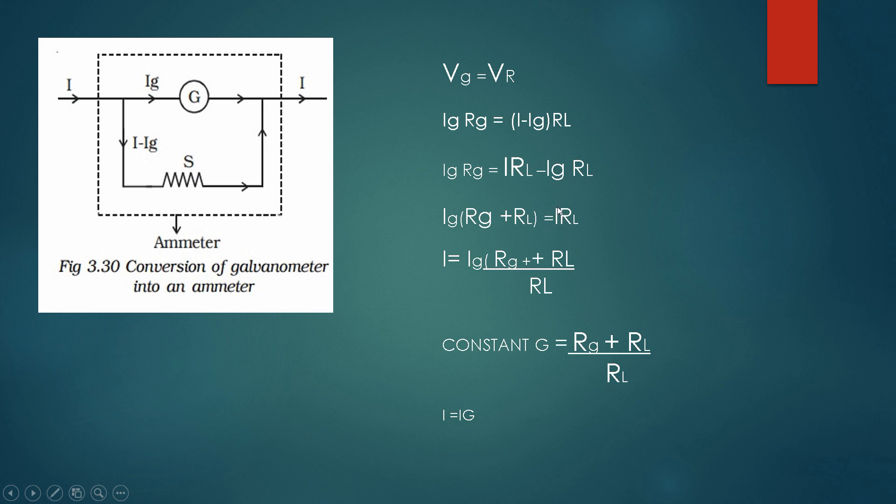Now, the input current I, we are dividing by RL and sending it over here. So the formula becomes like this. Now, we know the resistance which we connected and the resistance of galvanometer is also a known value. So we are considering this as a constant, constant G equals galvanometer resistance plus low resistance divided by low resistance.